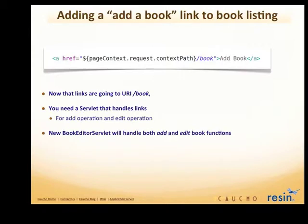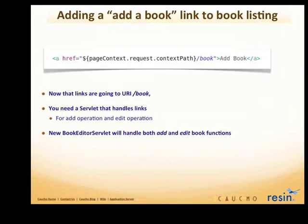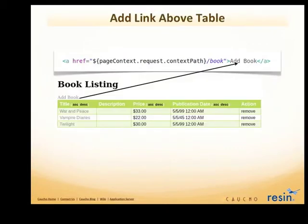Adding an add book link to the book listing: at the top of the HTML table, we want to have this add book link. This add book link will also go to the servlet that's mapped with slash book. Now we're going to create that servlet — it's going to be called the book editor servlet. That's going to handle both the add and the edit: loading the add form, loading the edit form, as well as handling the post of that form back to that same servlet.